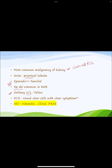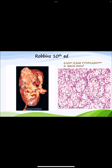Microscopically, tumor cells are round to polygonal with centrally placed nuclei, and the cytoplasm is clear due to the presence of glycogen and lipid — an important viva question. This explains both the clear cell morphology on microscopy and the yellow appearance on gross. Immunohistochemistry markers used are vimentin, CD10, and PAX8, important for MCQs.